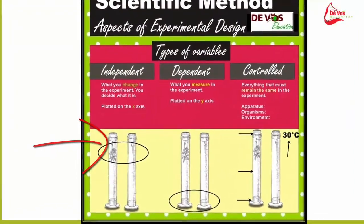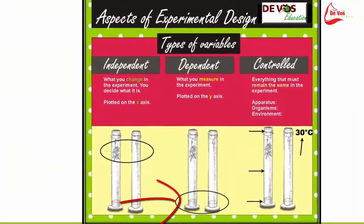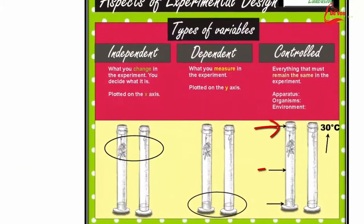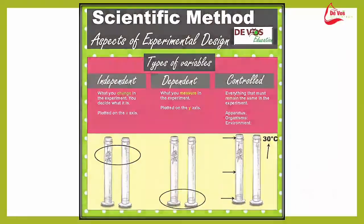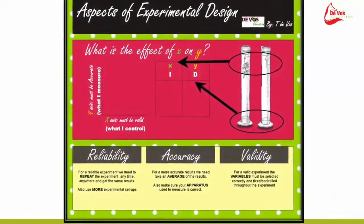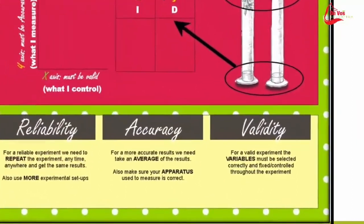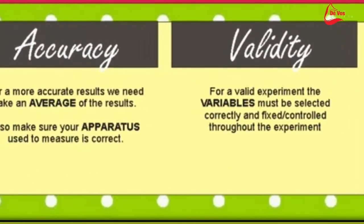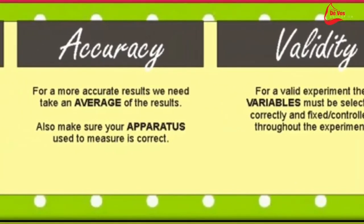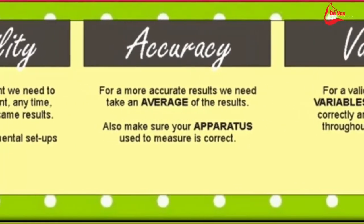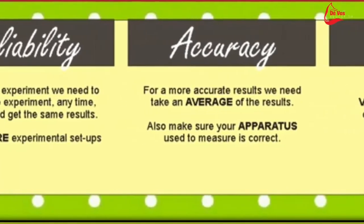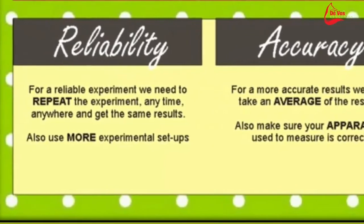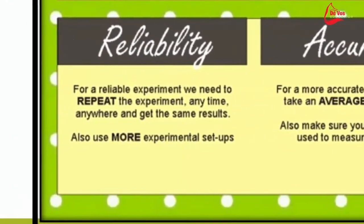This is very important to ensure that your experiment will be a valid experiment. Validity is one of the factors that should always be checked. When we are looking at our experiment for validity, we look at the variables. For accuracy, we need to take an average of our results and we have to make sure that the apparatus we use is the correct apparatus.